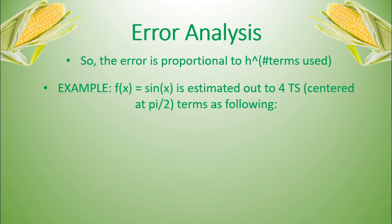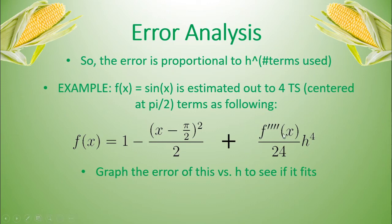Now in our example, f(x) equals sine x, we estimated out to four Taylor series terms, centered, centered means what value we know, at pi over two as the following. We decided it was this. And the error here is going to be plus this term, which is the term after that, the fifth term. And what we can do here is graph the error of this versus h to see if it actually fits the h to the fourth value here. So let's go ahead and do that. Let's pull up an Excel spreadsheet.